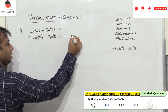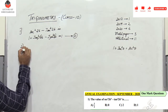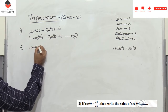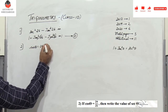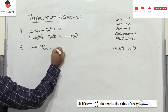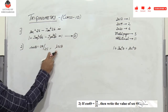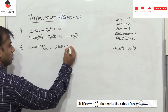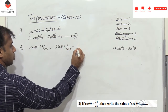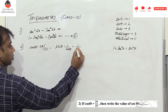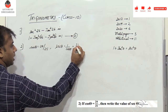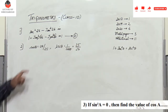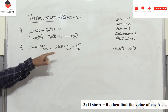Problem 2: if cosθ = 24/25, what is secθ? We know that secθ = 1/cosθ, so it is simply the reciprocal of 24/25, which gives us 25/24.